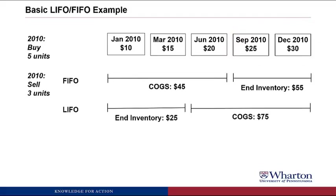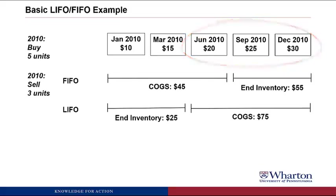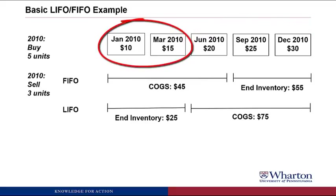Now if we sell those same three units using the LIFO method, to calculate COGS we start with the most recent cost and work backwards. So we take $30 plus $25 plus $20 to end up with Cost of Goods Sold of $75, and then the two oldest costs — the $10 and $15 — are what is left in ending inventory, giving us ending inventory of $25. So there's a $30 difference in both Cost of Goods Sold and ending inventory between the FIFO and LIFO methods.